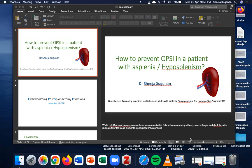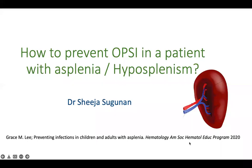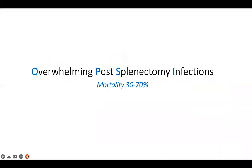Good evening, everybody. Today we would be discussing how to prevent OPSI in a patient with asplenia or hyposplenia. OPSI is overwhelming post-splenectomy infection. We are discussing this today because the mortality can be as high as 30 to 70 percent, and it is estimated that less than 10 percent of patients with asplenia really receive the prophylactic or preventive treatment they are recommended to receive.